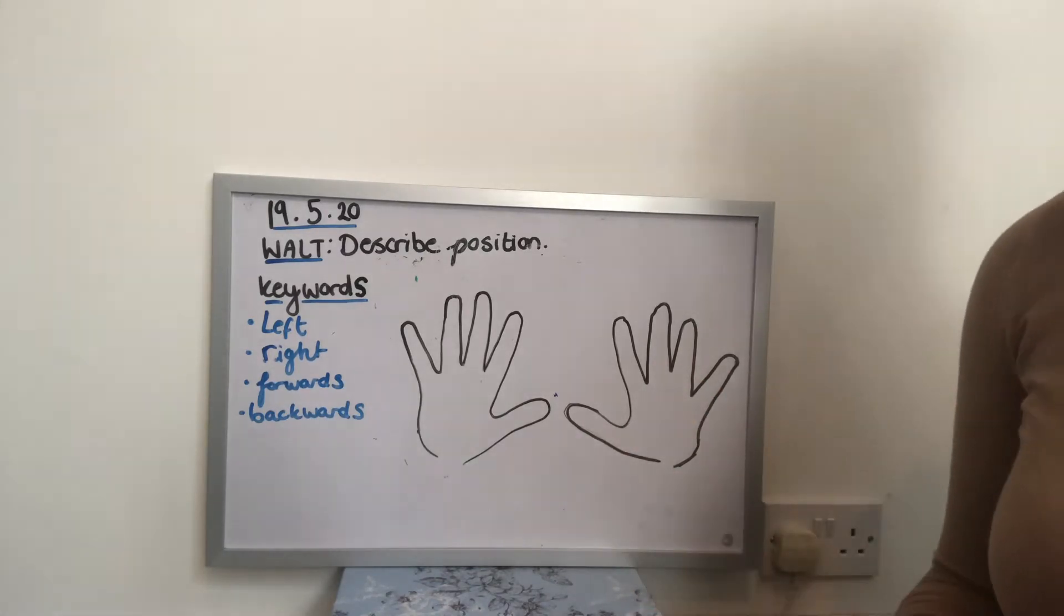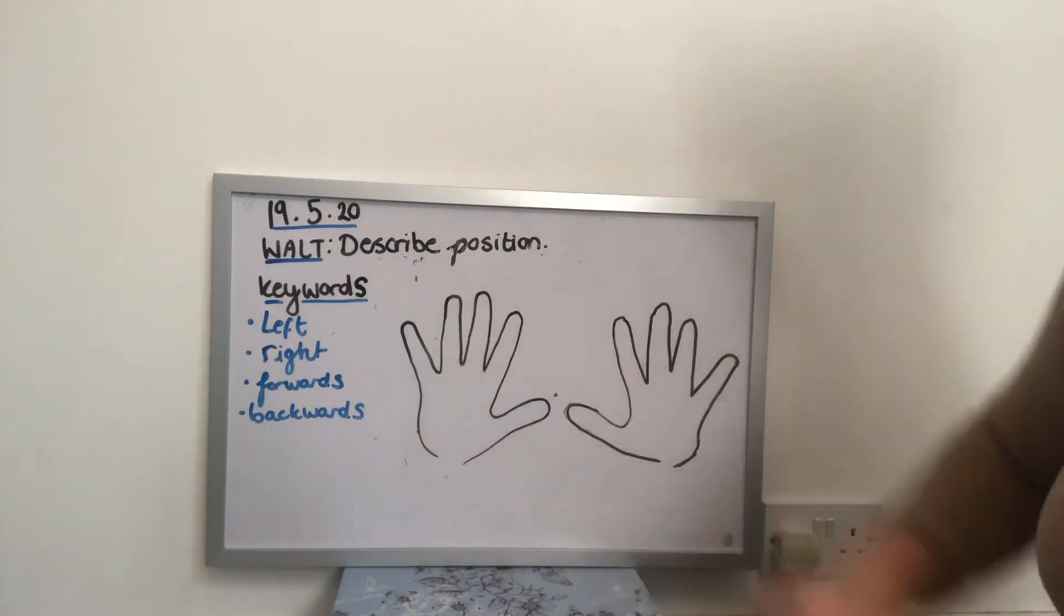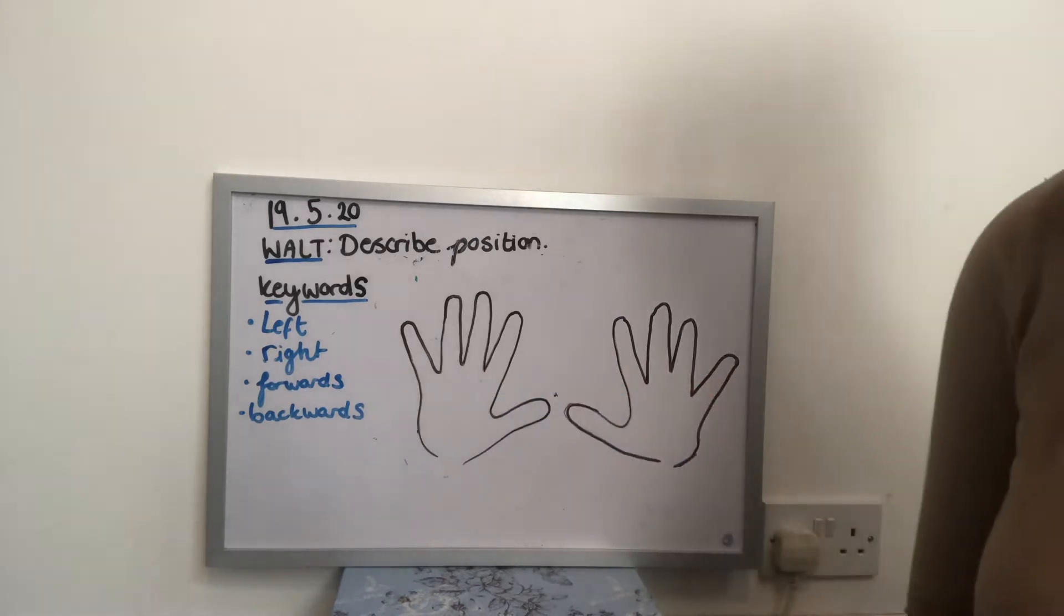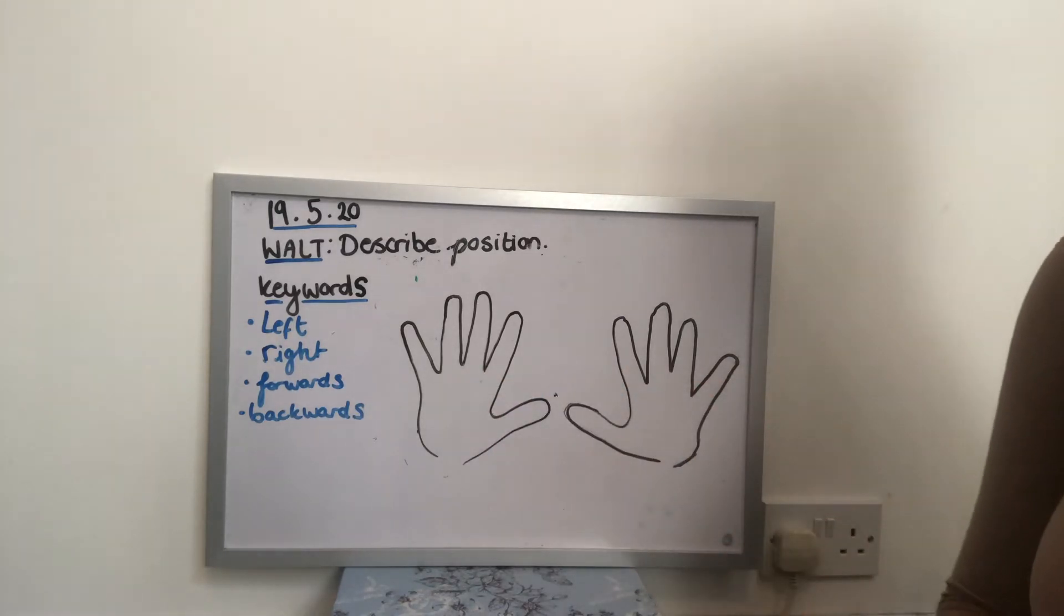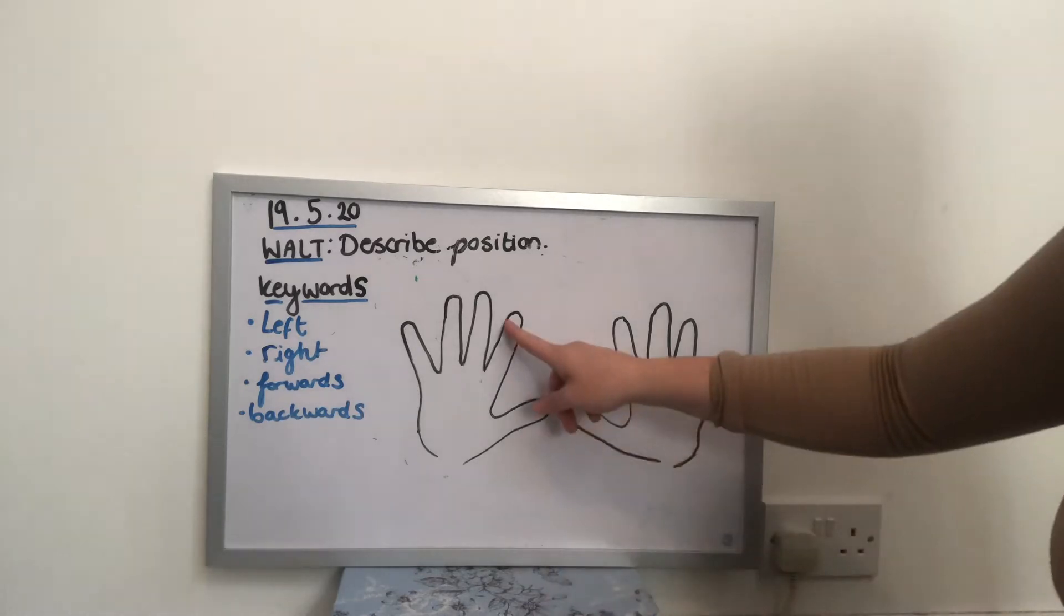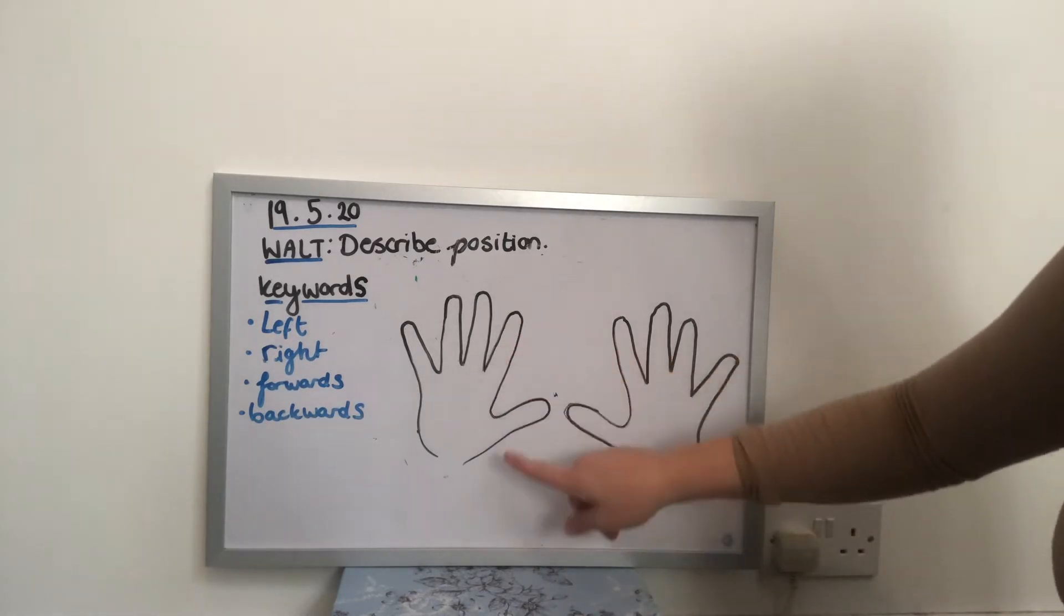Thinking about our hands, that's how a lot of us remember our lefts and rights. So I've drawn my hands on the board. If you want to, you can get a piece of paper and you can draw your own hands. When I draw my hands, a way to think about which one's left and which one's right is thinking about the index finger and the thumb.